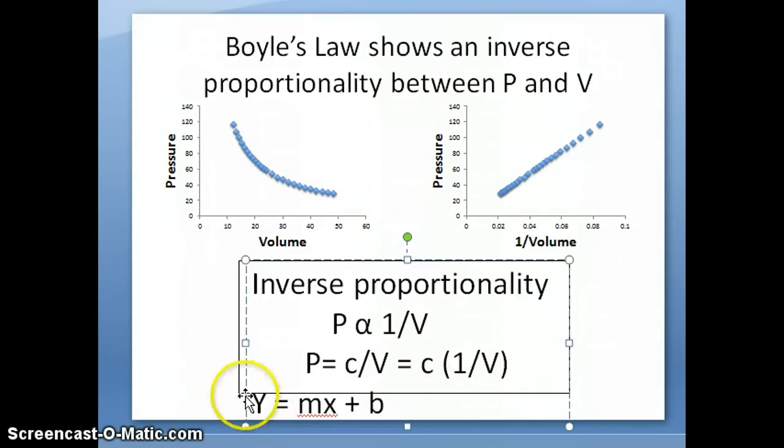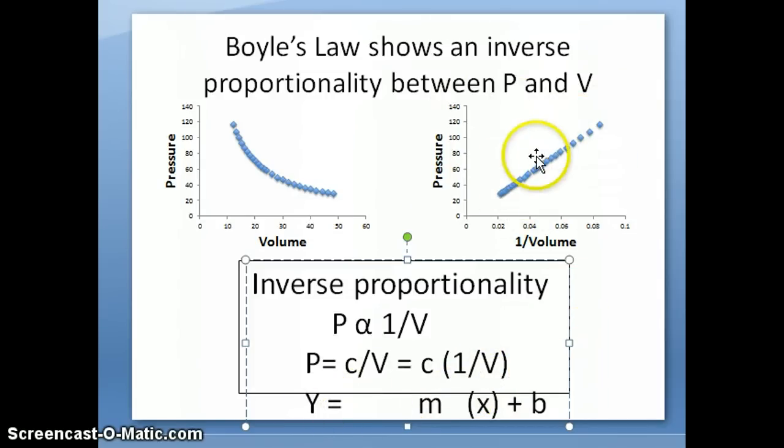Notice that P is equal to C times 1 over V. If you compare this to the line equation, the line equation looks like Y equals MX plus B. In this case, your P is like your Y-axis, because that's what you're plotting on the Y-axis is pressure. Your M here is just the constant. Your X is really just your 1 over V. This data would look like a line if I were to plot it with P on one side and the X being 1 over V on the other side. That's exactly what we see here. A straight line relationship when we plot P relating to 1 over V.